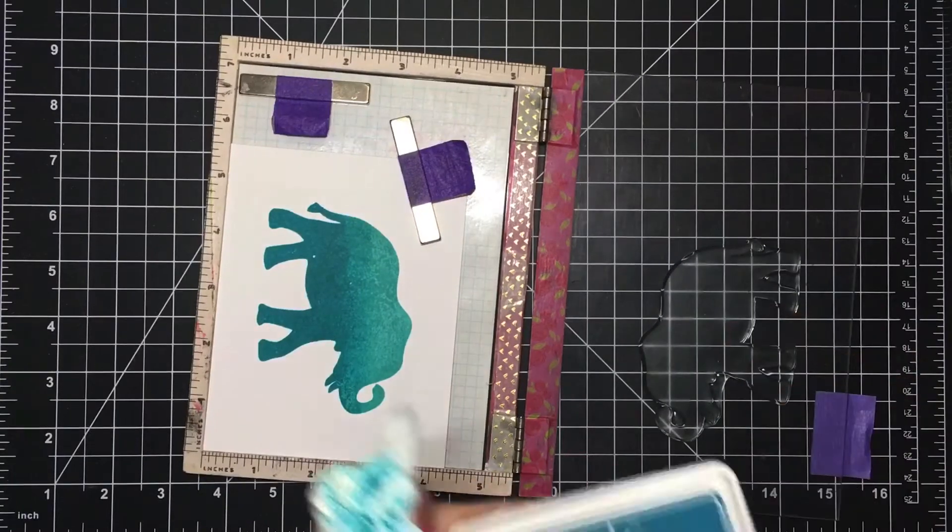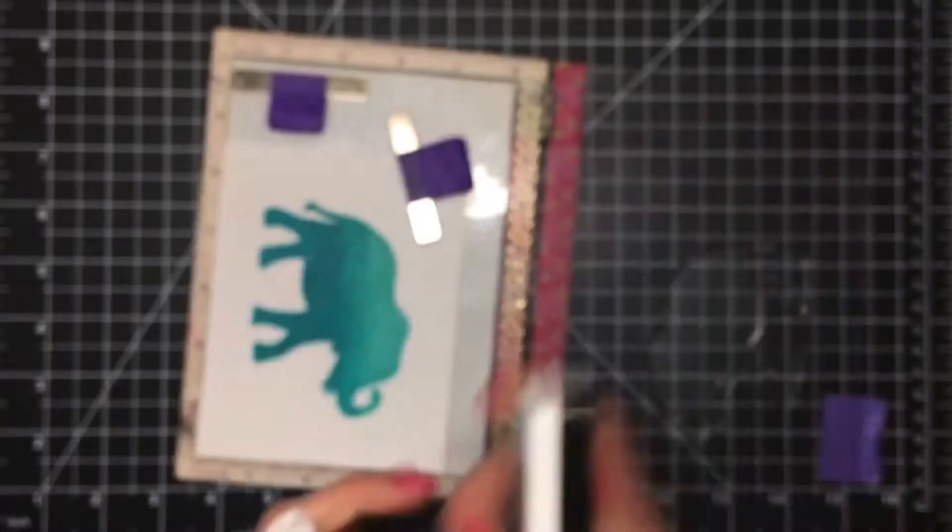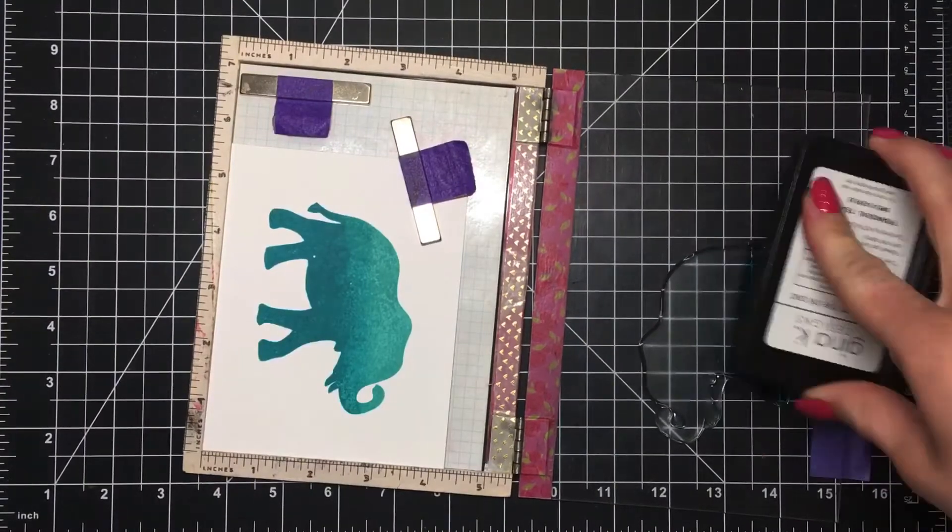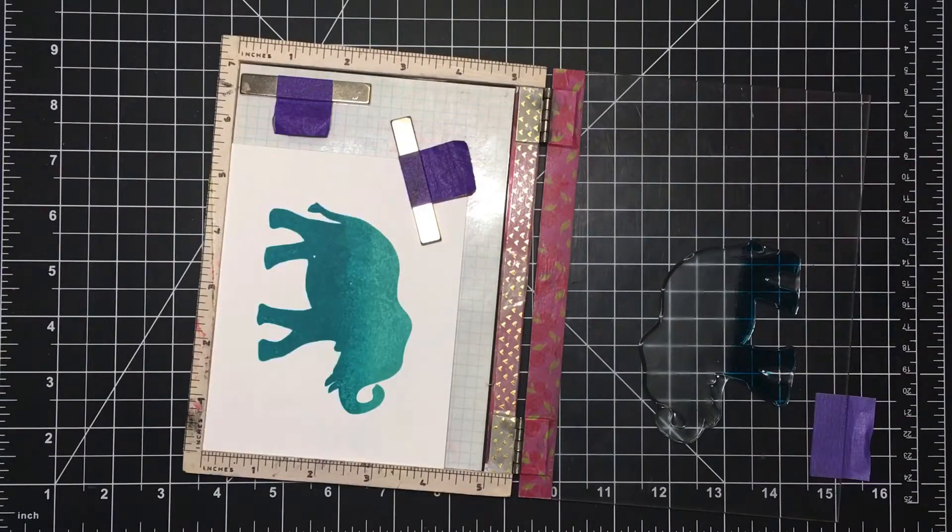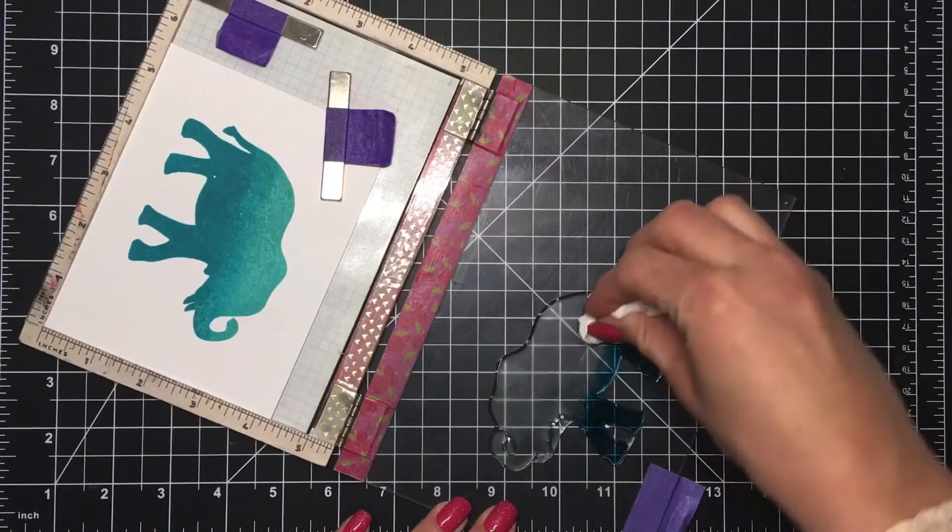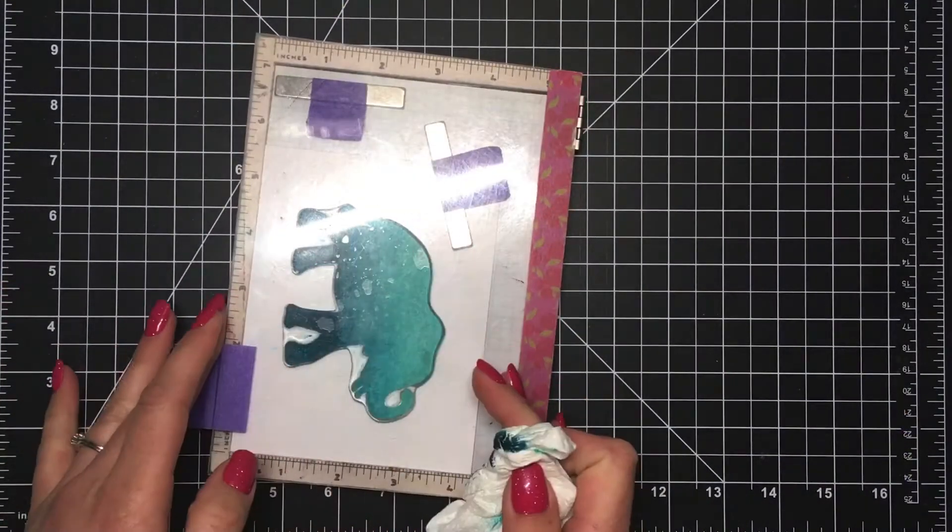I come in with my third and darkest color which is Tranquil Teal and ink up the bottom third of the elephant, and do that same thing with the paper towel to soften that edge so that it'll blend into the medium color.